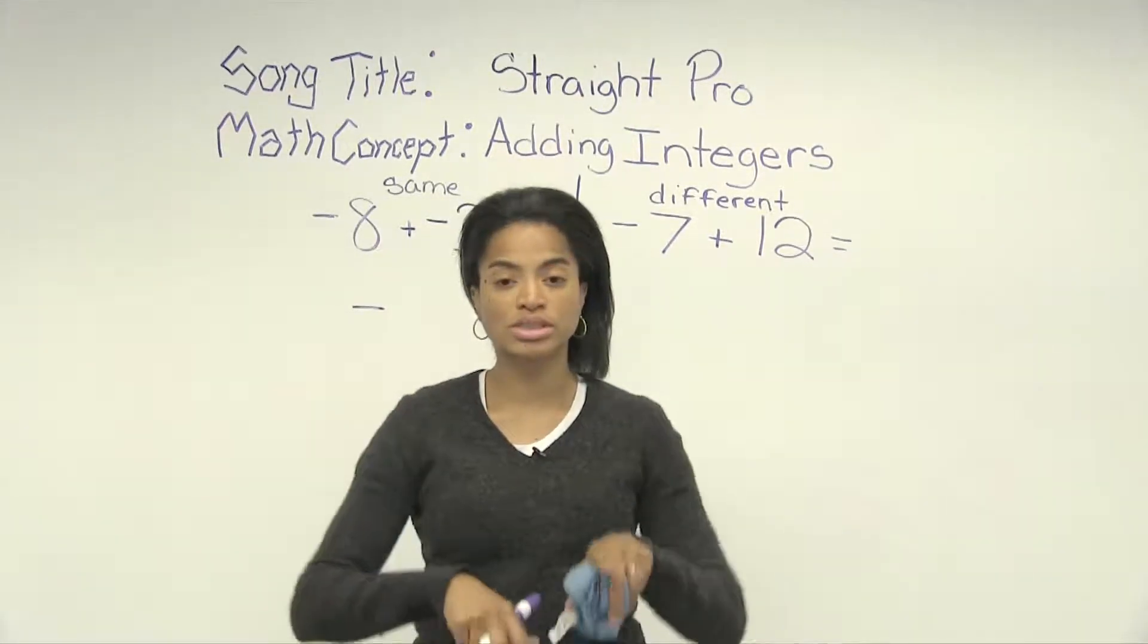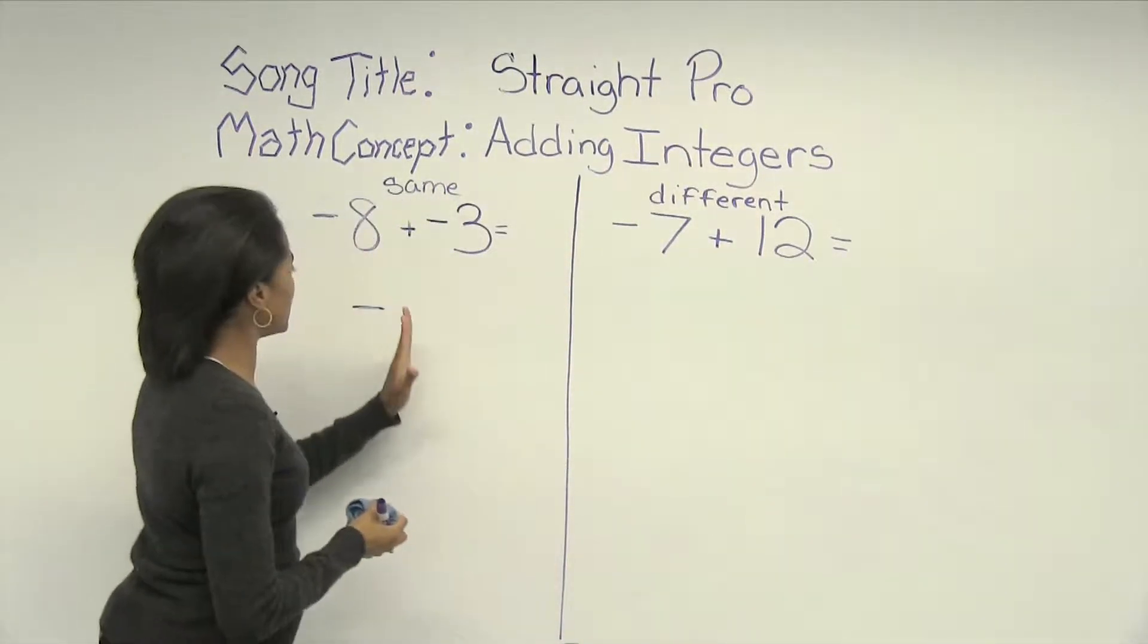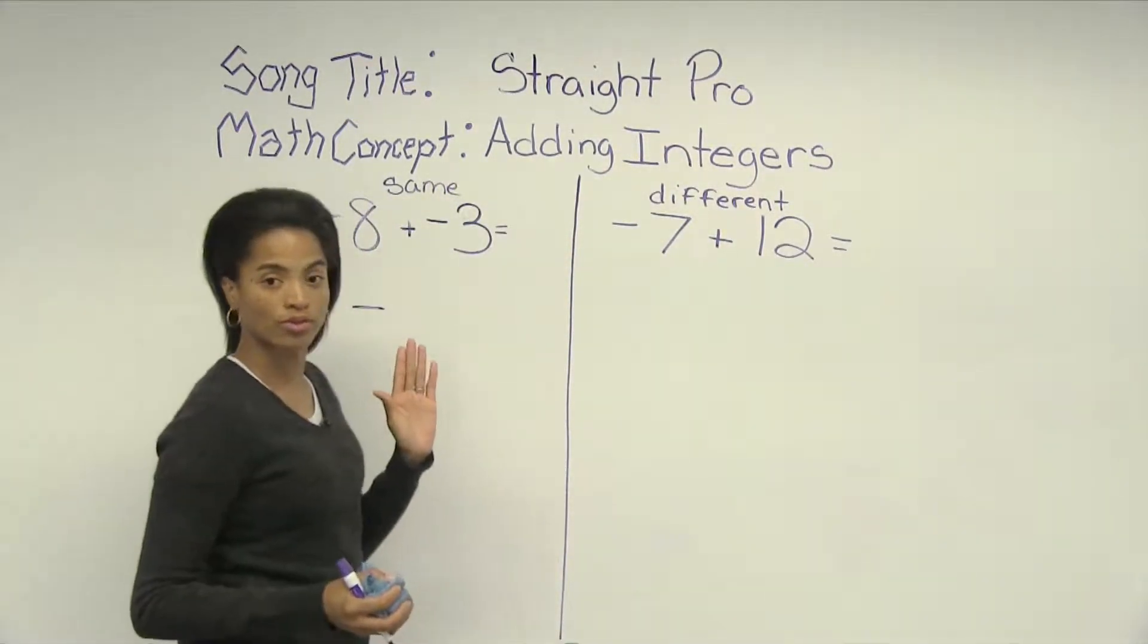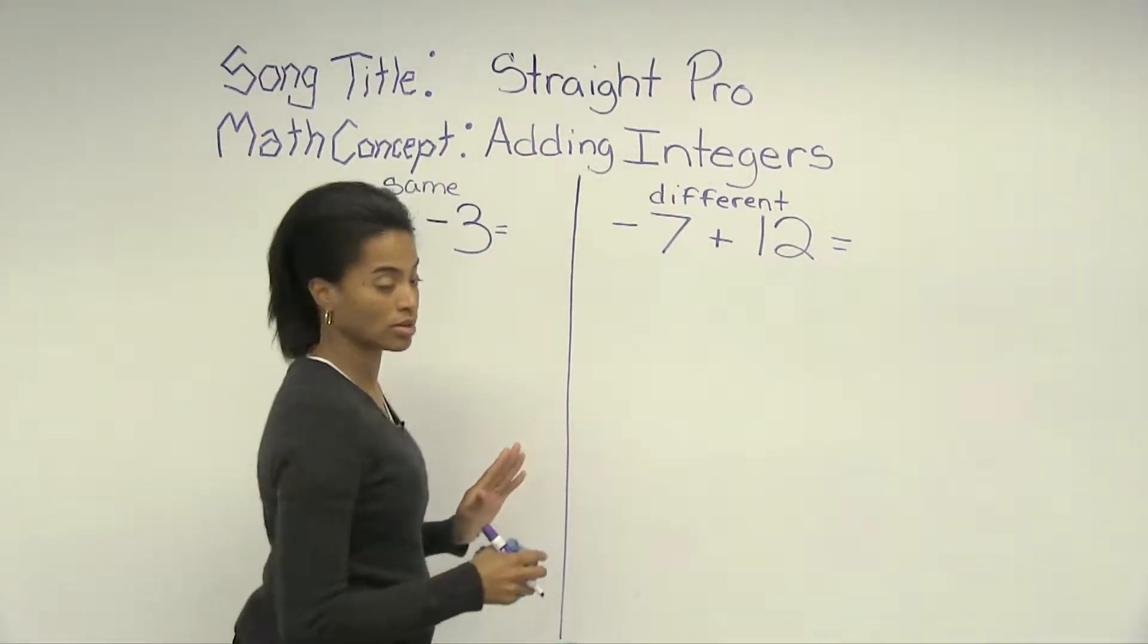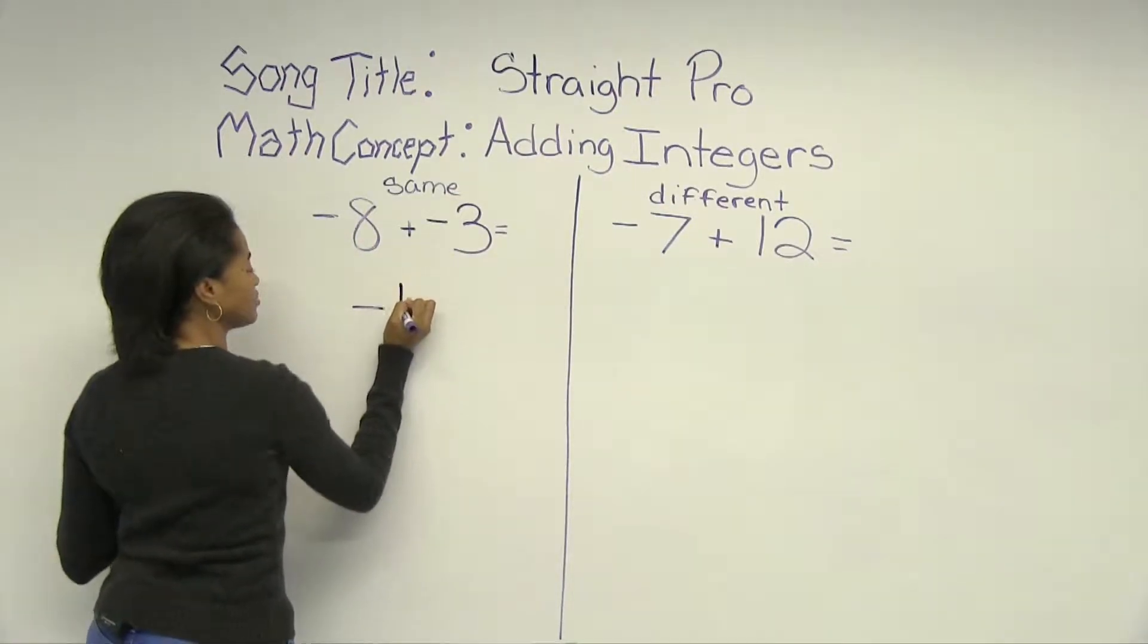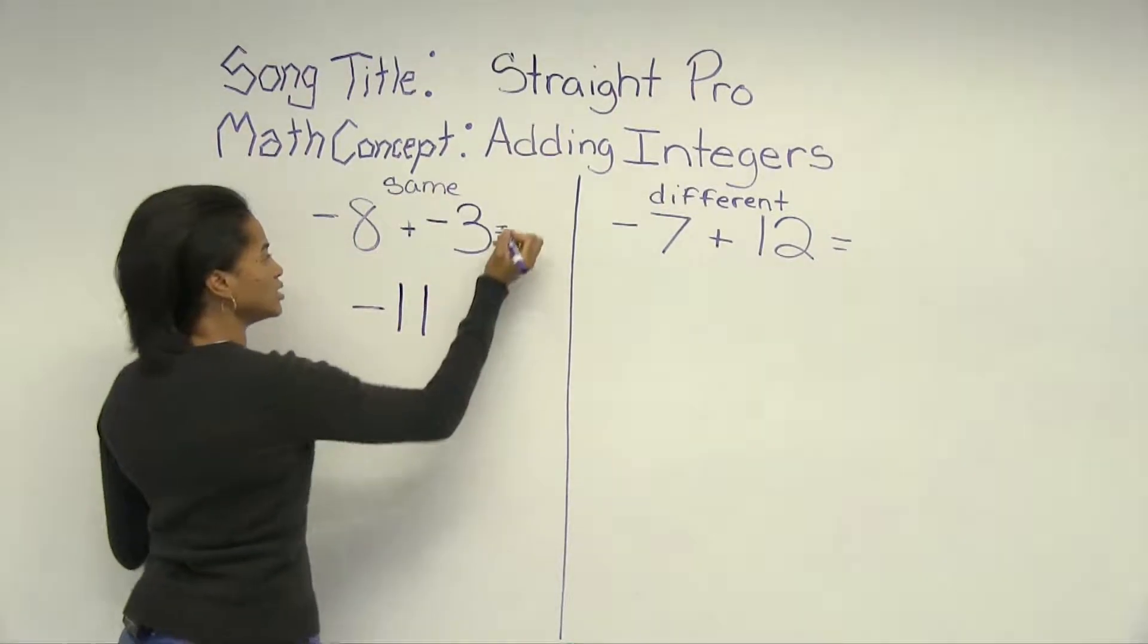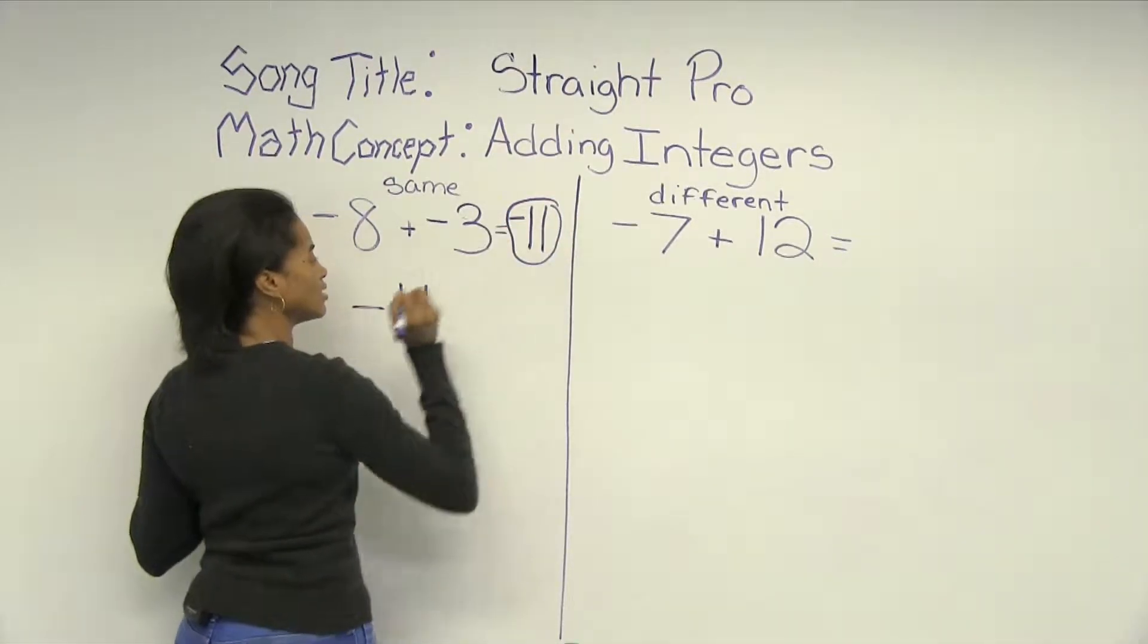So negative eight is eight spaces away from zero. Negative three is three spaces away from zero. So you want to do eight plus three, and that gives you 11. So your answer is negative 11.